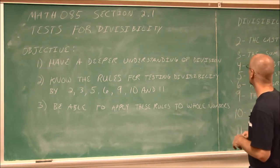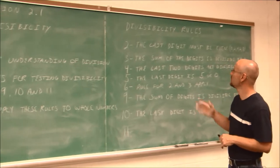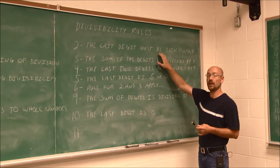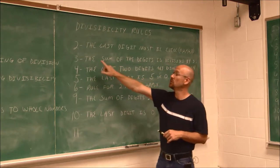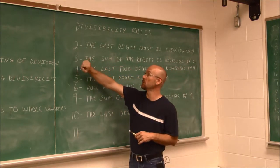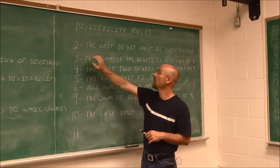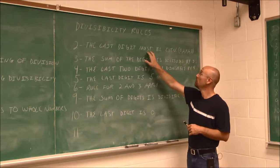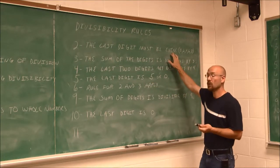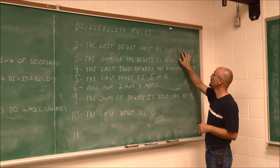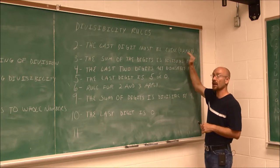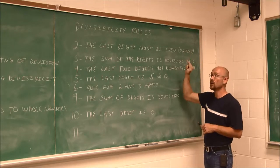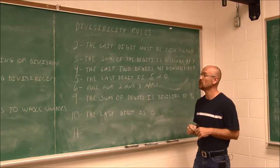So we're going to move to the next board where I've written down the divisibility rules. The first one: if a number is divisible by 2, the last digit of the number must be even. We know our even digits are 0, 2, 4, 6, 8. So if any number ends in 0, 2, 4, 6, or 8, it will be evenly divisible by 2.